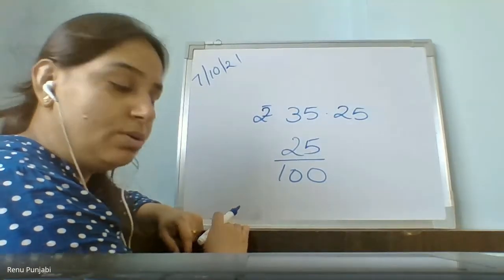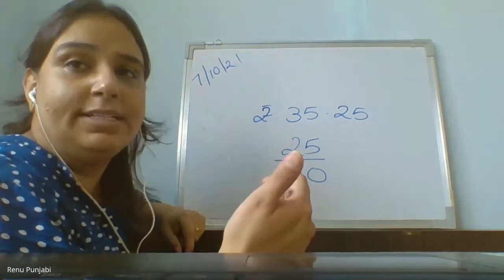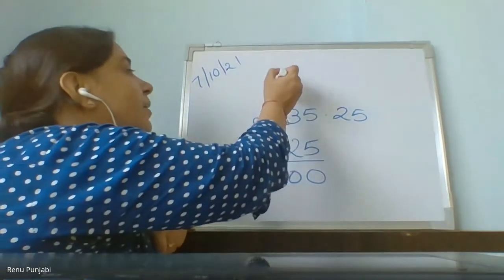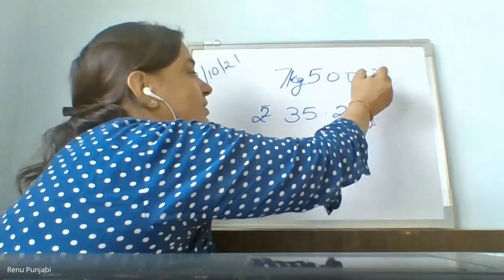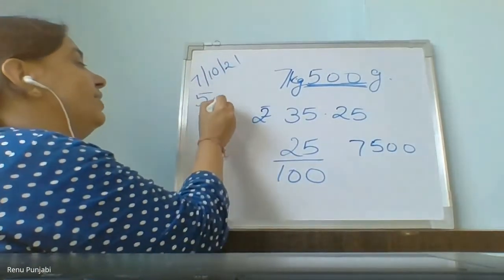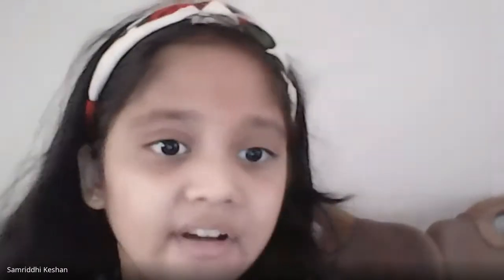25 upon 100. So in this chapter, the relation we are going to learn is decimal with rupees, with length — meters and centimeters — and with capacity. We are going to learn decimals. Sometimes you say I bought 7.500 kg — this means 7 kg and 500 grams. And 500 grams written as a fraction is 500 divided by 1000, because 1 kg equals 1000 grams.